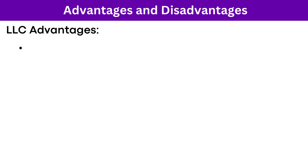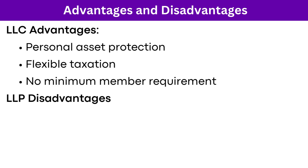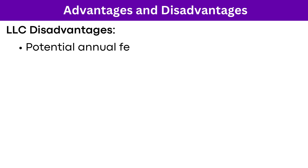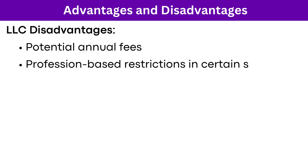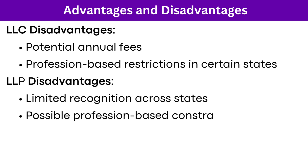Advantages of an LLC include personal asset protection, flexible taxation, and no minimum member requirement. Advantages of an LLP include safety from other partners' malpractice and a simplified formation process. The drawbacks of an LLC include potential annual fees and professional-based restrictions in certain states. The drawbacks of an LLP include limited recognition across states and possible professional-based constraints.